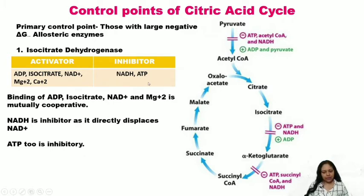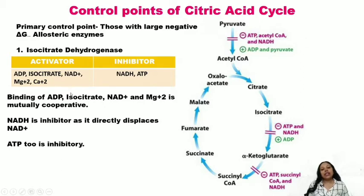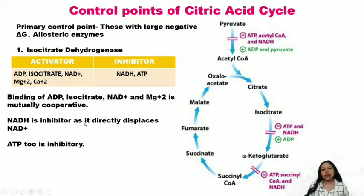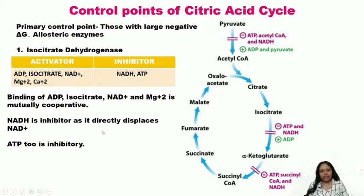The binding of any one activator on isocitrate dehydrogenase is mutually cooperative — binding of one molecule eases the binding of the other, similar to cooperative binding in hemoglobin. NADH acts as a competitive inhibitor because it is structurally very similar to NAD+, directly displacing NAD+. ATP also plays an inhibitory role.